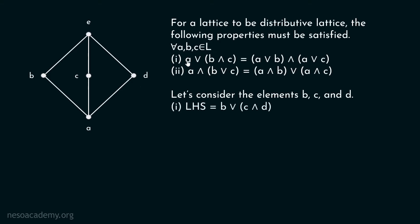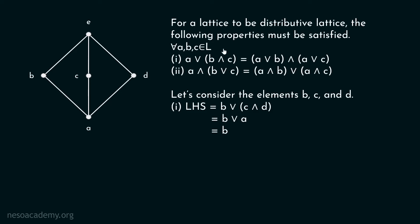Let's consider the LHS of the first property. We replace A by B, B by C, and C by D, so LHS is B∨(C∧D). C∧D means the greatest lower bound of C and D, which is A. So this becomes B∨A. The least upper bound of B and A is B, so LHS equals B.